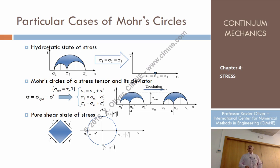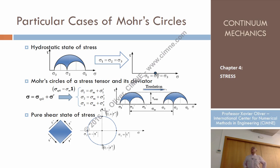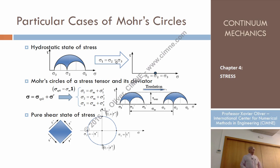What happens in the case of hydrostatic states of stress, also called an isotropic stress state? An isotropic stress state is the case in which the three principal stresses are equal to each other. So what would be the construction of the Mohr circle? I take sigma 1, place the sigma 2 point, place the sigma 3 point. Joining sigma 1 with sigma 2 gives just a point; joining sigma 2 with sigma 3 also gives a point. So the three circles collapse to a single point, and the representative Mohr circle is just a point on the sigma axis.